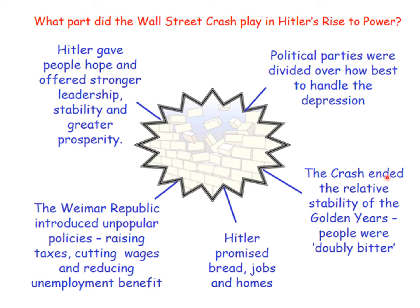The crash obviously ended the relative stability they had been experiencing during the golden years, so people were doubly bitter. They felt they were already quite bad after hyperinflation, then had recovered somewhat and were feeling better about things, but ultimately it just went completely wrong again and the government didn't seem to have a good handle on how to deal with it. The Weimar government introduced unpopular policies like raising taxes, cutting wages and reducing unemployment benefit for people already living in quite a lot of difficulty.